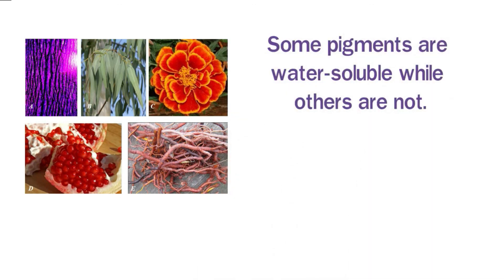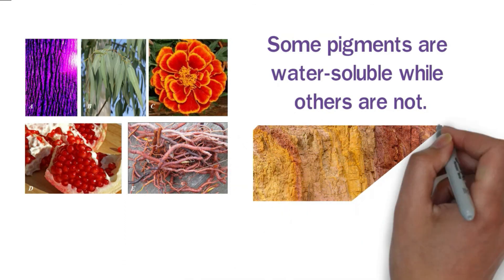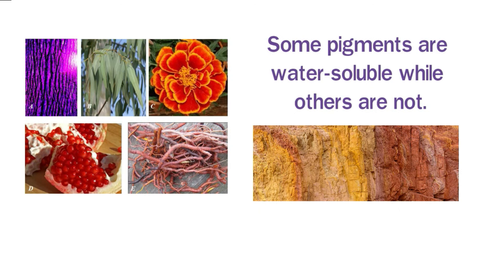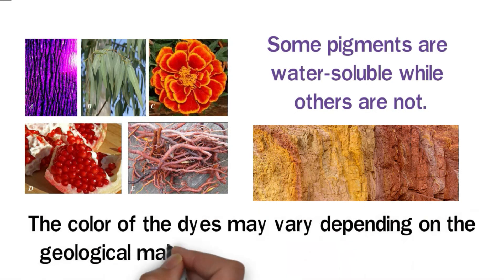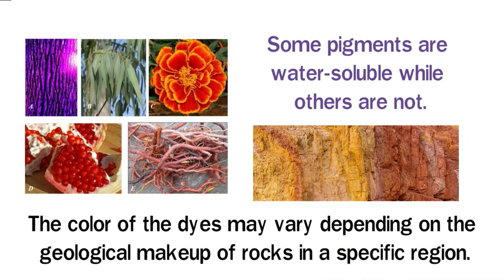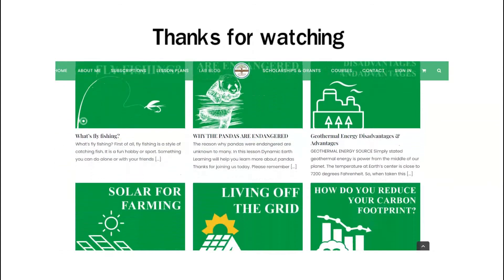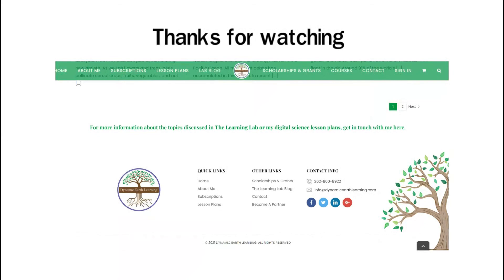Most of these pigments can easily be extracted so you can make your own homemade pigments. Some pigments are water soluble while others are not. Earth pigments can be found in areas where the earth is exposed through mining or erosion, and these pigments make excellent dyes for painting. The color of the dyes may vary depending on the geological makeup of rocks in a specific region. Thanks for watching — remember to check out our blog and online short courses in the description below for more great science and sustainability topics.